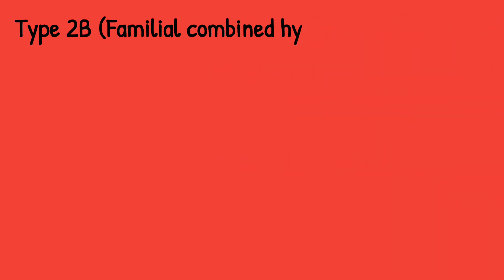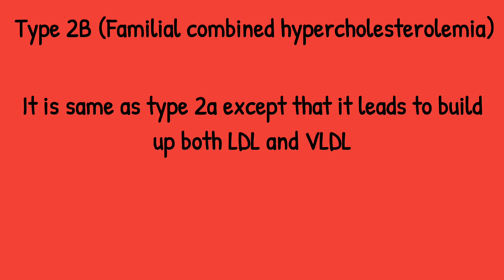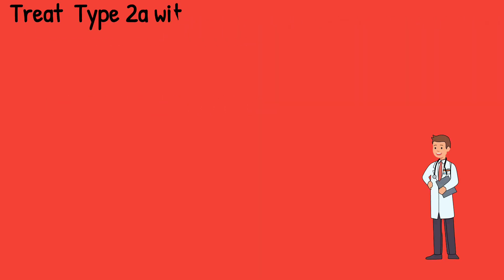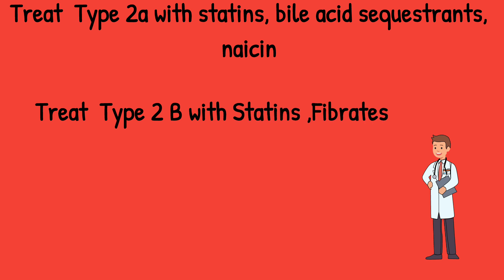Type 2b is called familial combined hypercholesterolemia. It is the same as Type 2a, but combined — two things are raised: LDL and VLDL. Treatment for Type 2a is with statins, bile acid sequestrants, and niacin.